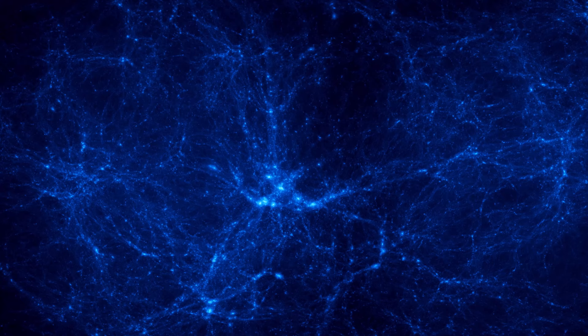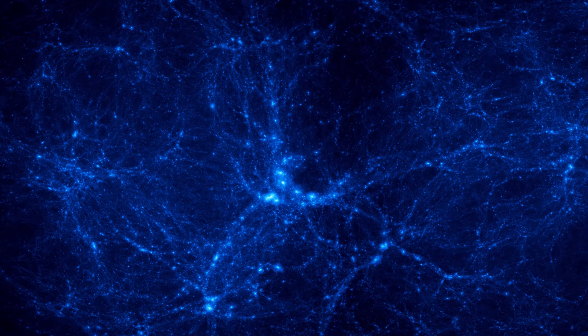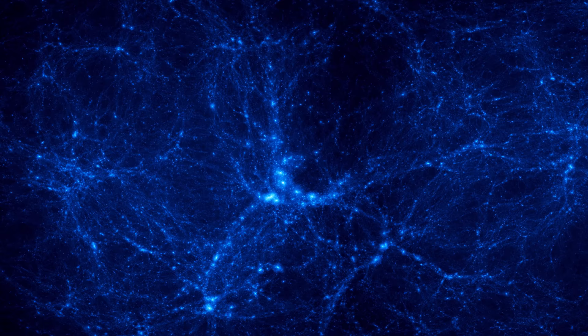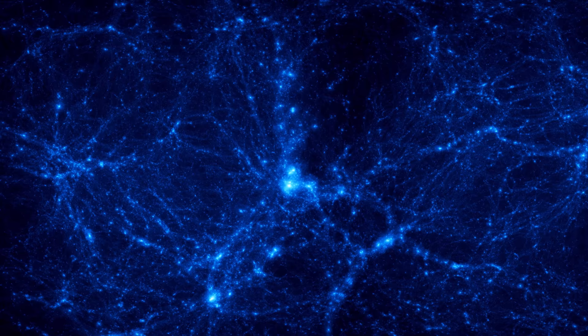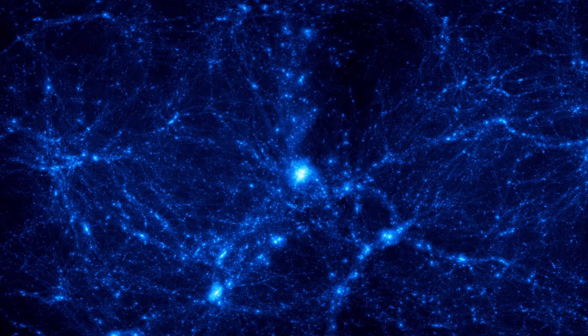This computer model shows the role dark matter has played in shaping the contours of the universe. Not long after the Big Bang, gravity began to amplify slight initial variations in the distribution of dark matter. Regions of the highest density attracted enough visible matter to form galaxy clusters and the largest superclusters.